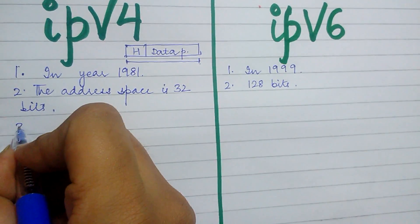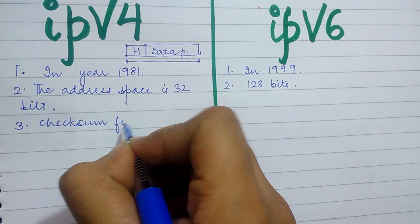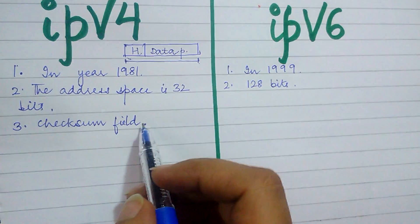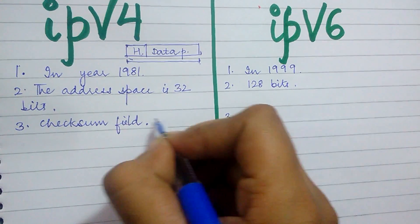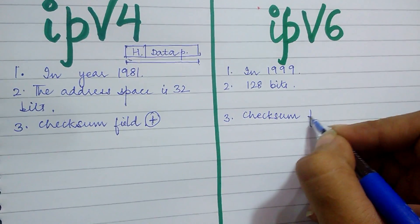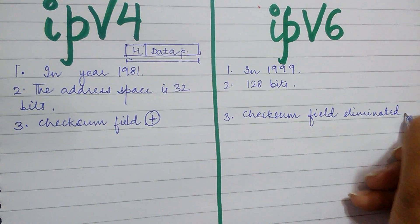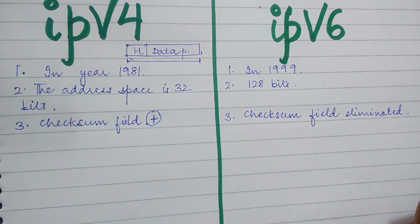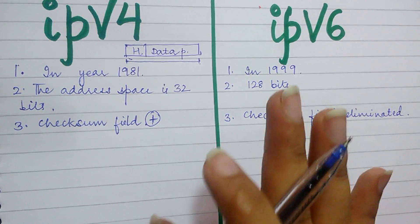The third point is that there is a checksum field. The checksum field is used to measure errors in the header part of the IP packet. It is present in IPv4 but it is eliminated in IPv6. It is eliminated in order to make IPv6 more advanced, because the checksum field is only used in the header part and any error in the header field is not very crucial.